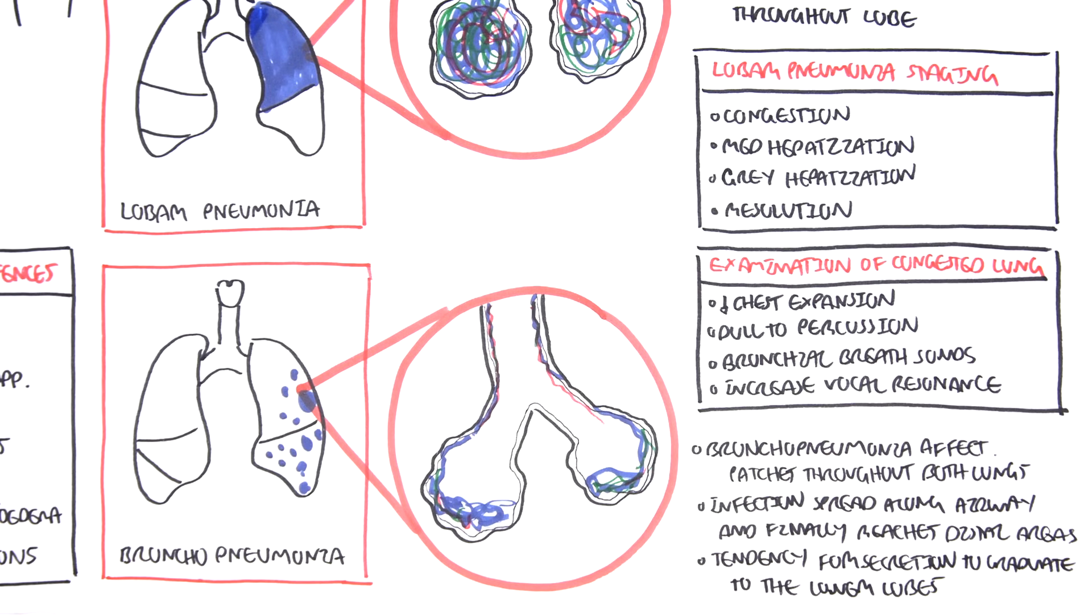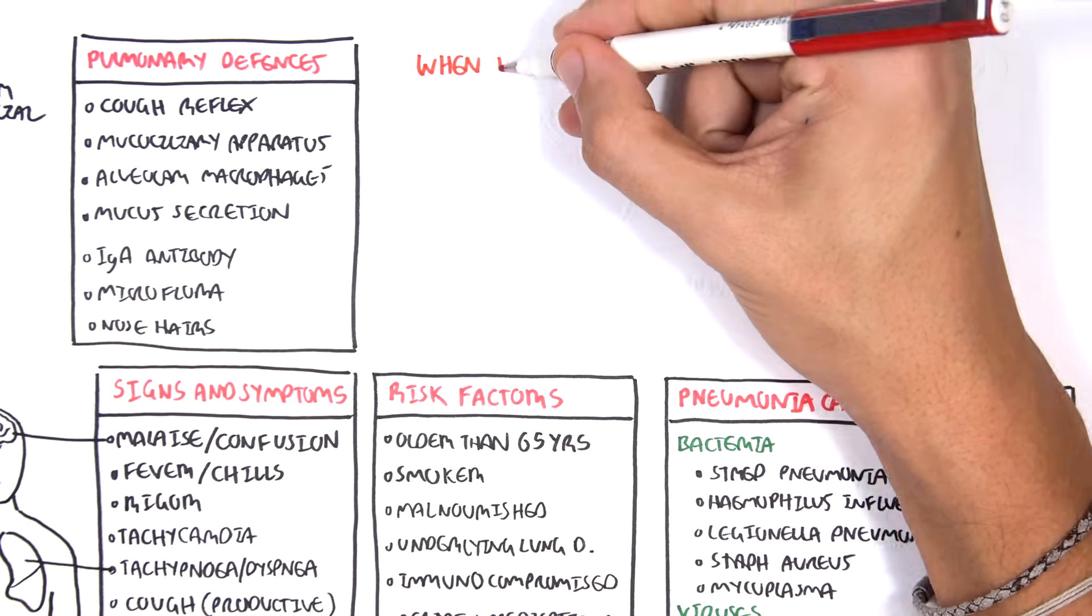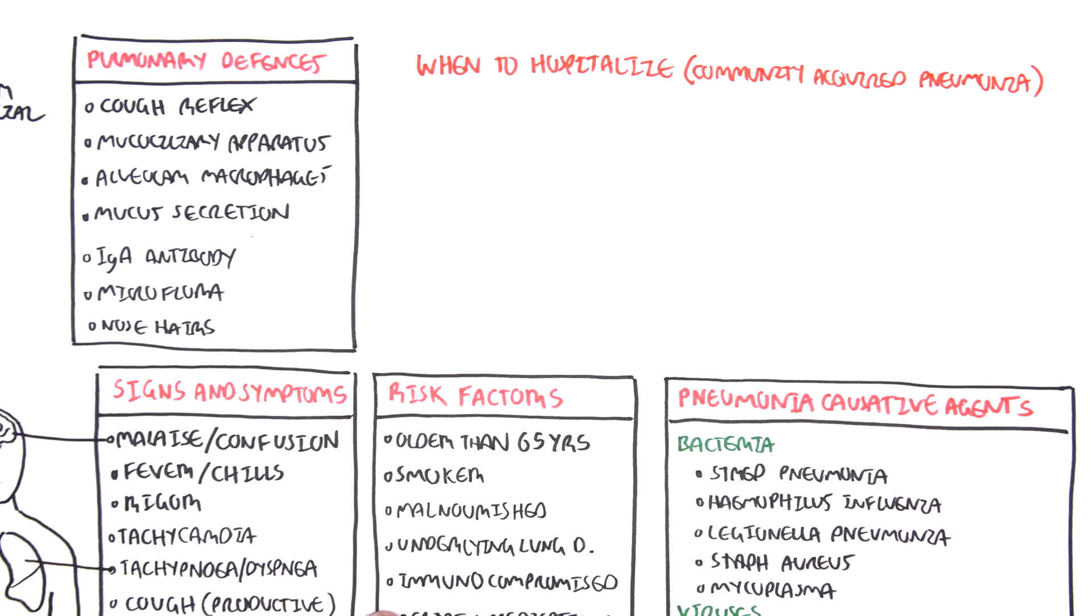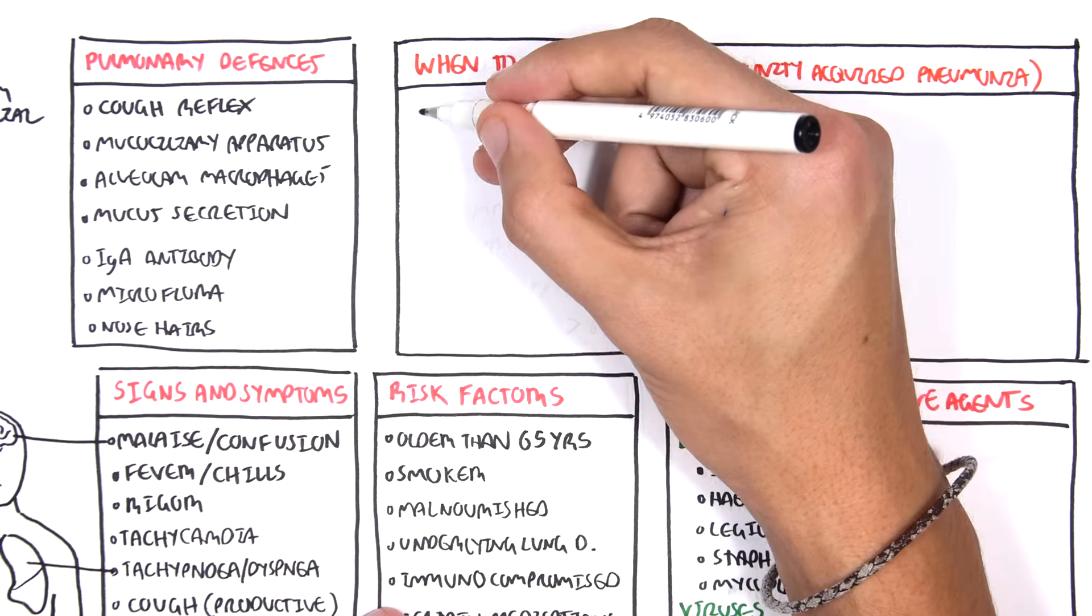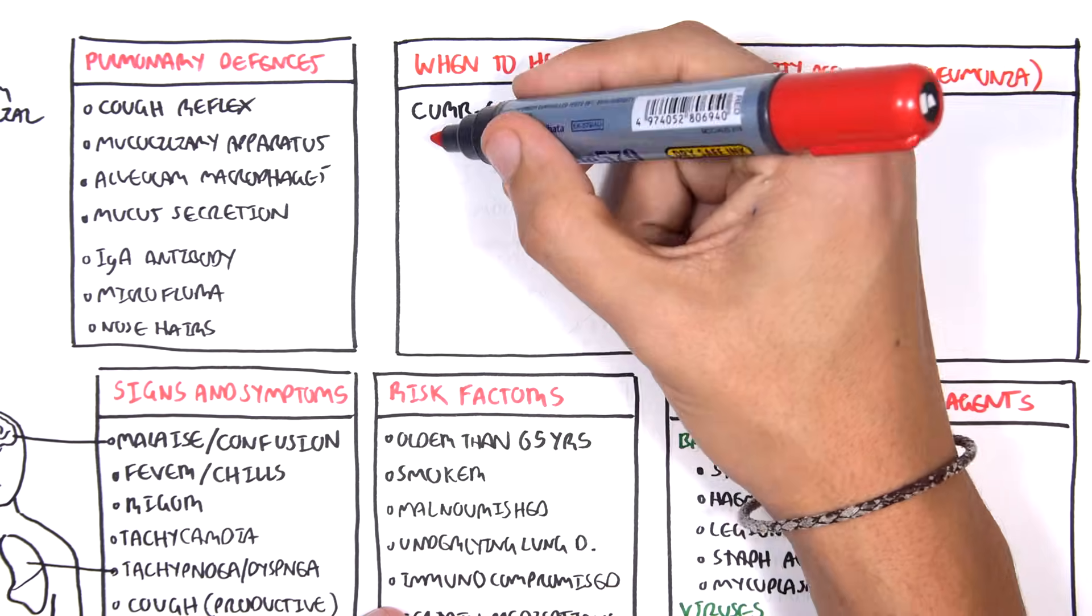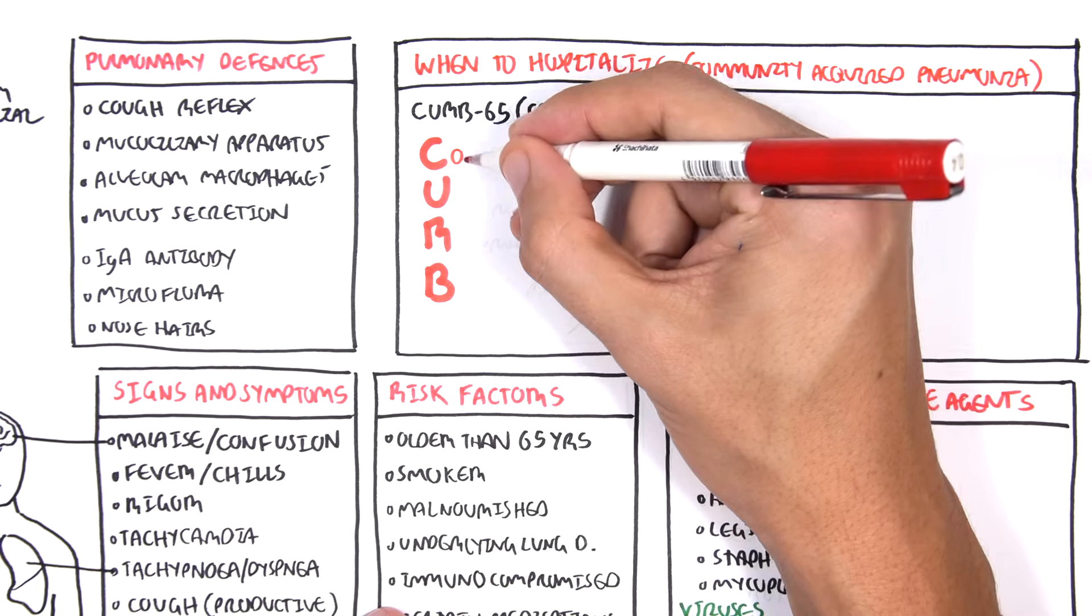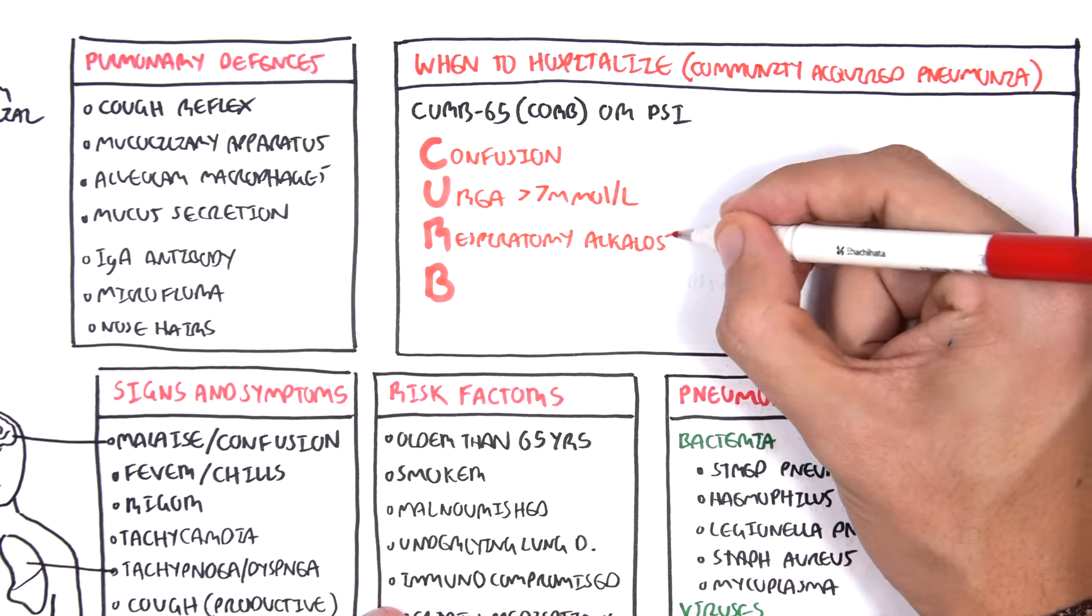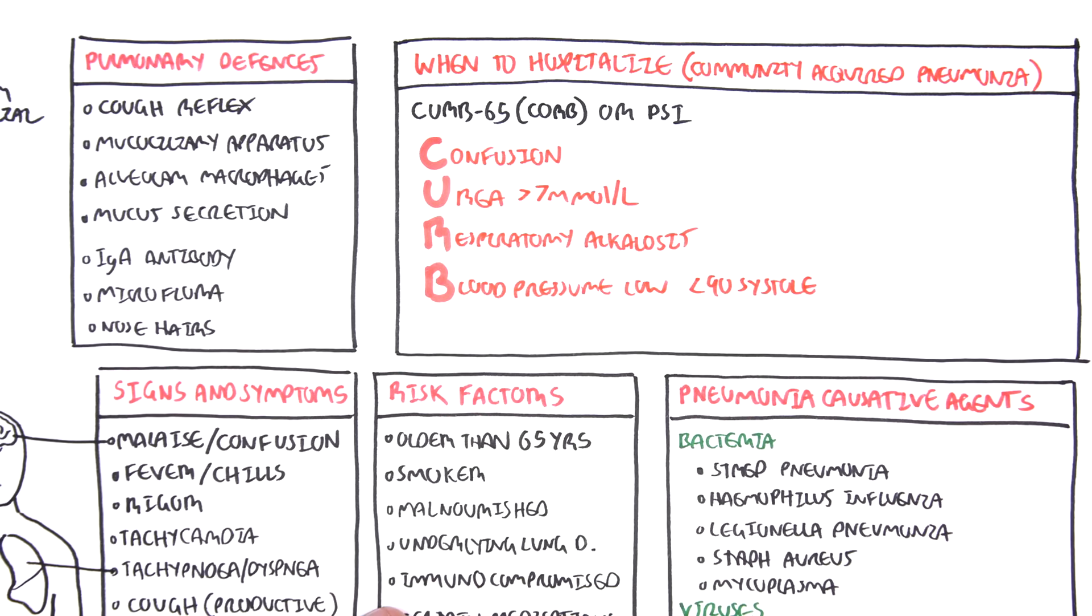So now we will look at how we can assess the severity of a person, a patient with pneumonia and when to hospitalize them. So when to hospitalize a patient, we will be specifically looking at community acquired pneumonia, but it can be honestly any type of pneumonia, I think. So when to hospitalize patients, we use a score called the CURB-65 or CORB, C-O-R-B, in Australia or PSI. We will be looking at CURB-65 and each of these letters stand for something we are trying to find. So C is for confusion. U is for urea over 7 millimoles per litre. R is for respiratory alkalosis and B is blood pressure lower than 90 systole. In Australia, we use CORB. So it's the same thing. Confusion. But instead of urea, we use oxygen less than 90%, so hypoxemia.